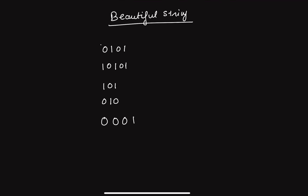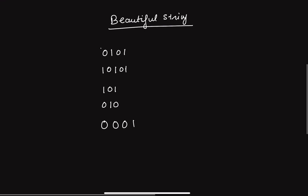Hello everyone, it's Aditya here and welcome back to the channel. Today we are going to solve a problem called 'Beautiful String.' The problem statement says that you are given a binary string — by binary string I mean there would be only zeros and ones in that string. For example, '010' is a binary string because it has only zeros and ones.